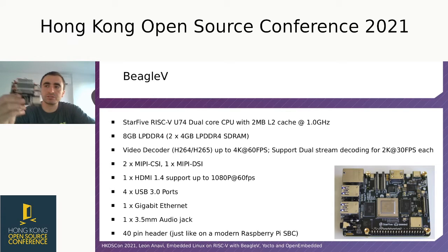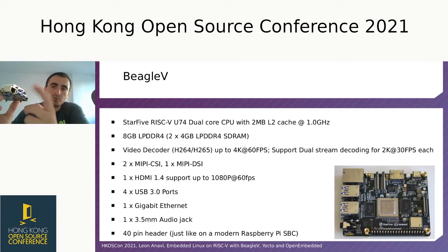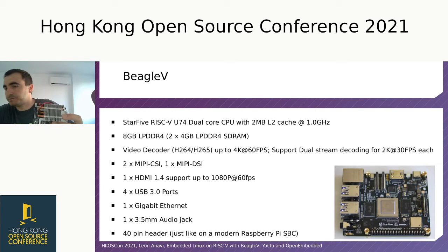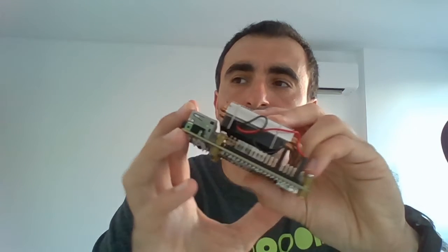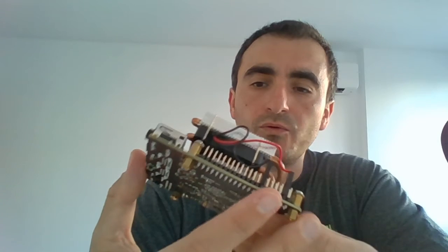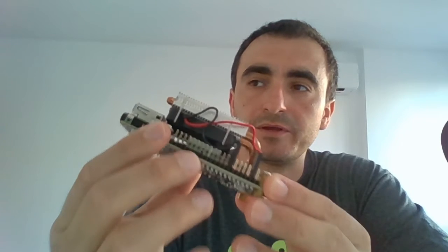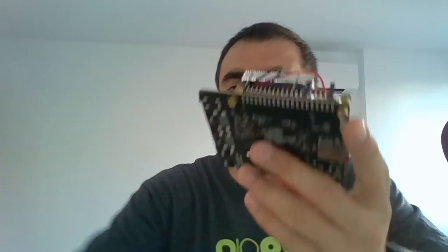Let's have a closer look at the specifications of BeagleV-5. It has a StarFive RISC-V U74 dual-core CPU with 2MB of L2 cache, and 8GB of DDR4 RAM spread on 2 banks. There is an Ethernet port, 4 USB 3 connectors, an audio jack, and a 40-pin header. The 40-pin header uses the same pinout as the Raspberry Pi, which has been standard since 2014 and is very popular in the maker community.